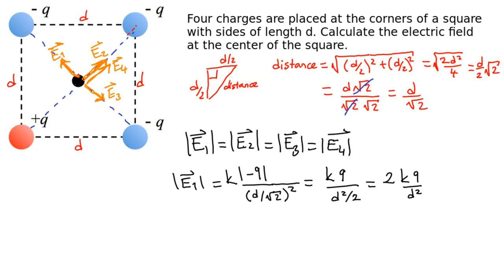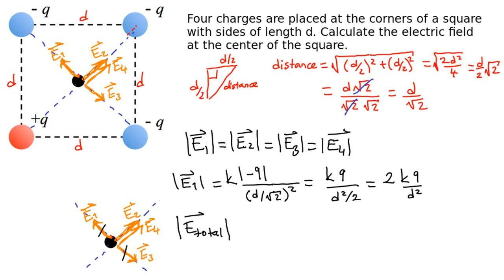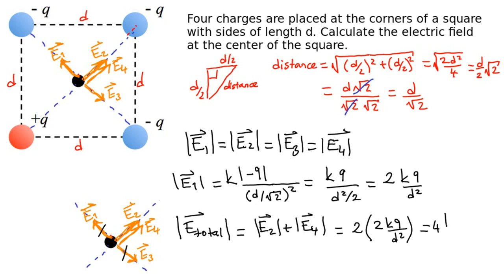Now we consider the electric field directions. Because E1 and E3 are equal in magnitude but opposite in direction, they cancel each other. Therefore, the total electric field magnitude equals |E2| plus |E4|. That gives us 2 times 2kq over d², which equals 4kq over d². So the total electric field vector equals 4kq over d², and the direction is northeast.